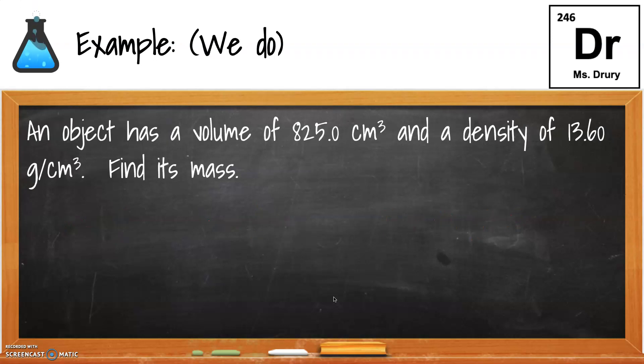Let's do another one together. An object has a volume of 825 cubic centimeters and the density is 13.6 grams per cubic centimeter. Find its mass. So try this on your own. Let's check our answers. So that means that the density is going to be given as 13.6 on the left's field, and the volume was given as 825 in the denominator, and we need to solve for mass.